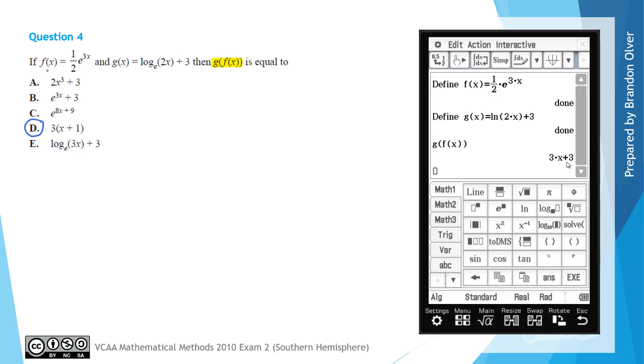Now, if you were to attempt to do this by hand, we could have f of x in green and g of x in purple, just so we can keep track of what's going on.